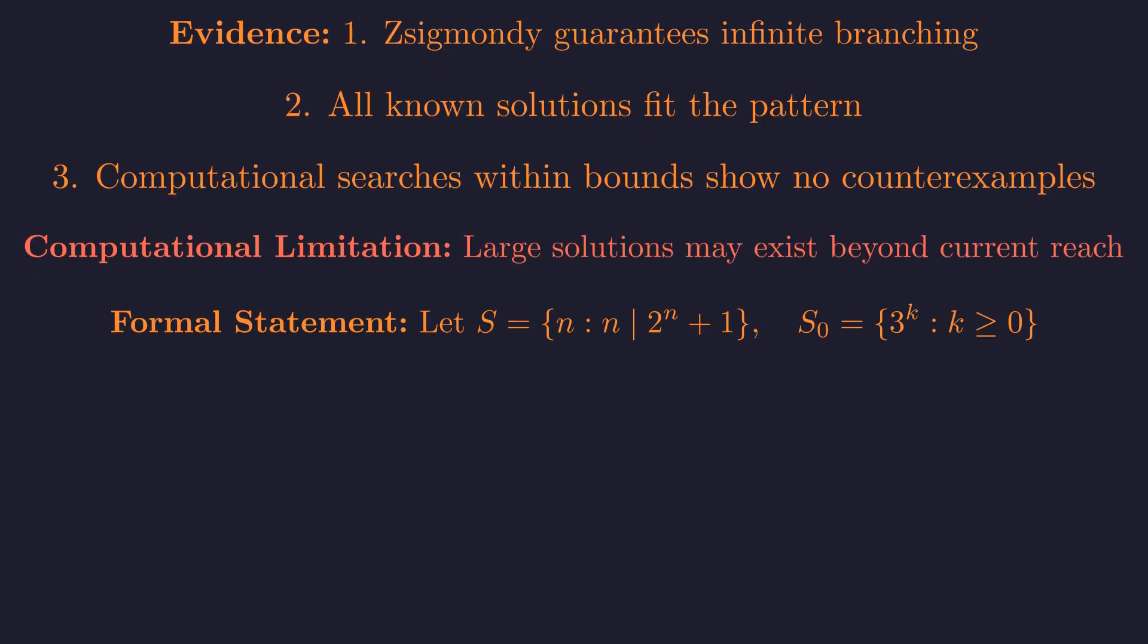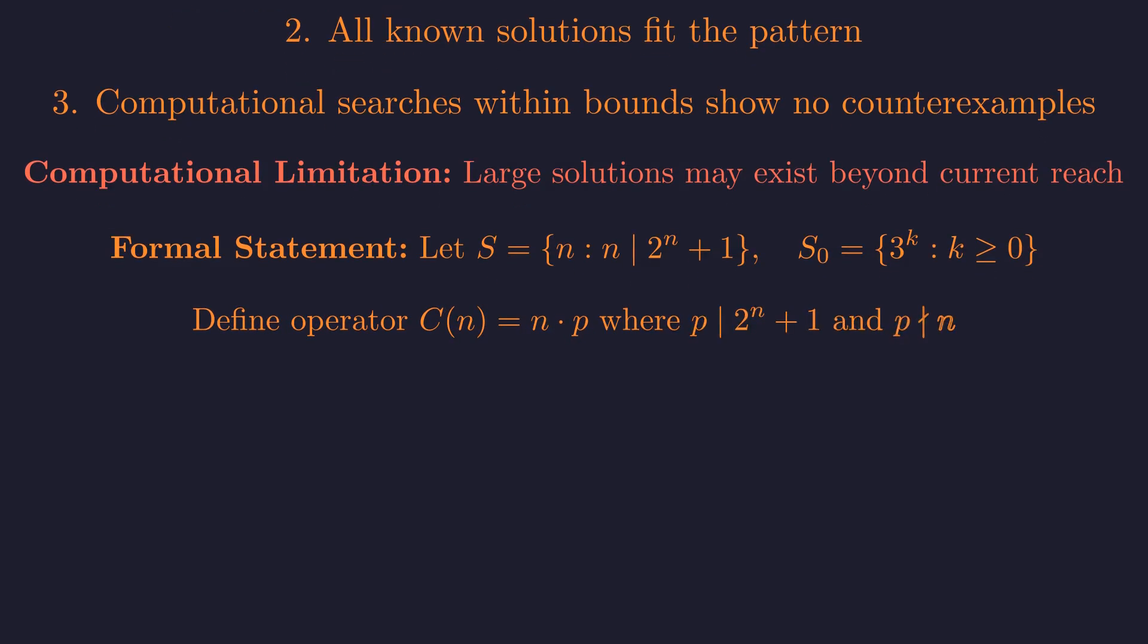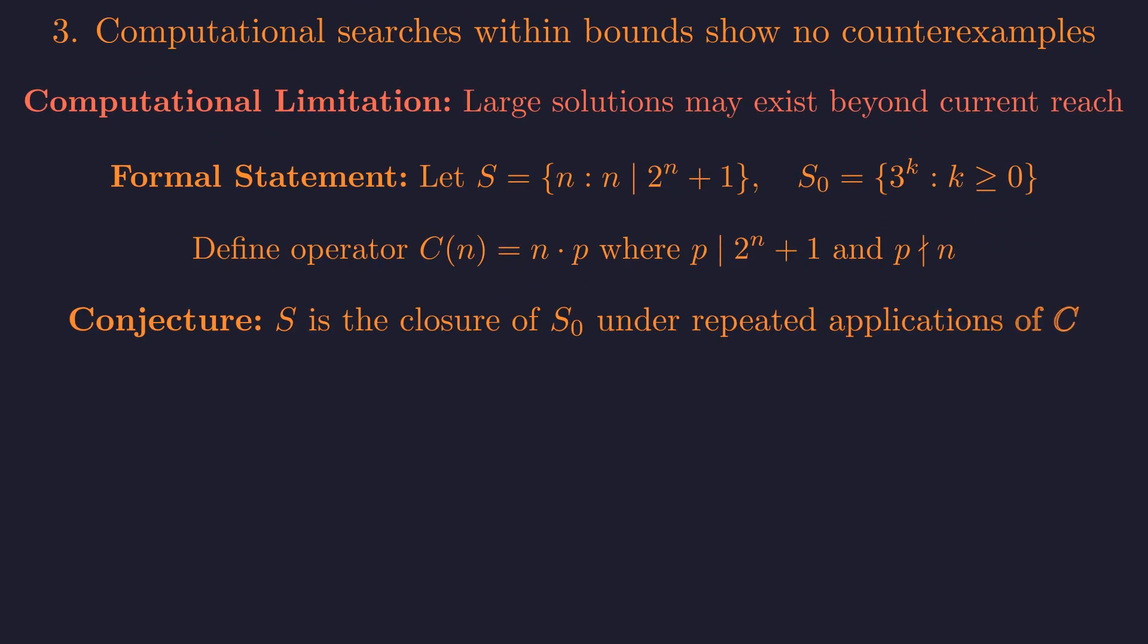To state the open question with full mathematical precision, let S be the set of all solutions and let S not be the set of all powers of 3. Define the construction operator C of N as N times P, where P is a prime that divides 2 to the N plus 1 but doesn't divide N. We conjecture that S is the closure of S0 under repeated applications of C. This reformulation into the language of sets, initial seeds, and closure operators is the gateway to real mathematical research, transforming our problem into a genuine open question.